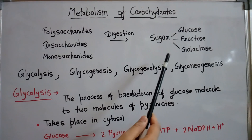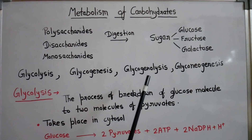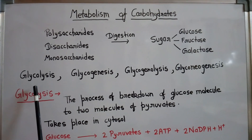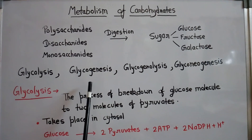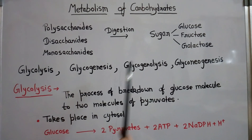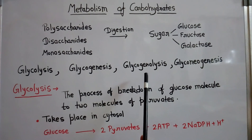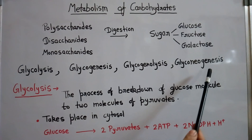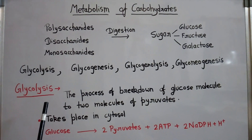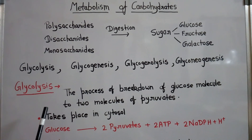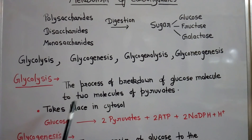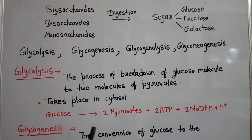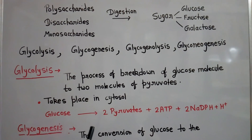This glucose undergoes 4 types of metabolic activities: glycolysis, glycogenesis, glycogenolysis, and gluconeogenesis. We will firstly consider all of these in short, and the mechanism of these we will understand in the next video.